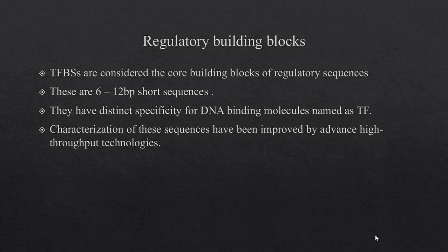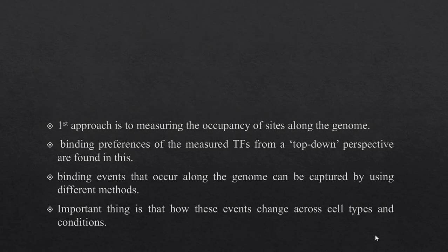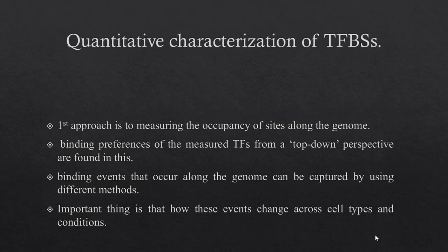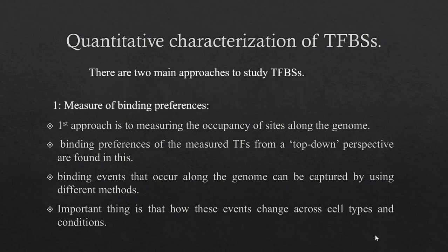Characterization of sequences has been improved by different high-throughput sequencing methods. There are two main approaches for quantitative characterization of transcription factor binding sites. The first approach is the measurement of binding preferences — specifically, where in the genome these transcription factor binding sites are present and what percentage of the genome they occupy.